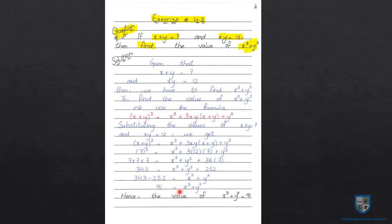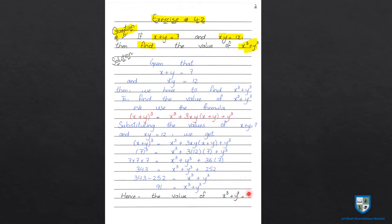The value we needed to find was x cube plus y cube. We have found it: it equals 91. Hence, the value of x cube plus y cube is equal to 91. This completes question number 6, where we found x cube plus y cube by using the algebraic formula.